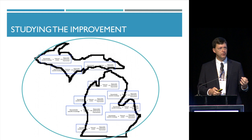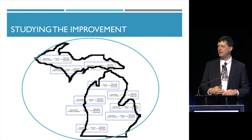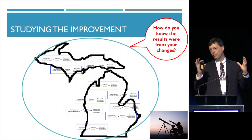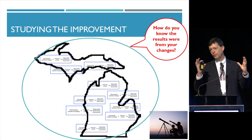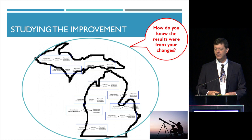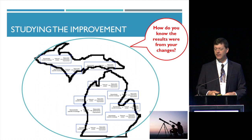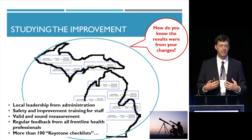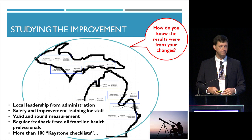What was so powerful about Pronovost's work was that they actually studied the improvement and asked: how do you know the results were from your changes? They collected that data and went back years after to talk to the ICUs. But this is actually what improvers don't do very well. Improvers get so focused on what they're doing locally that they don't do a great job of studying it. And so what we end up with is this very rich detailed set of quantitative data from the original trial.